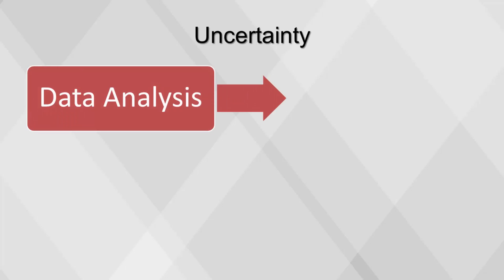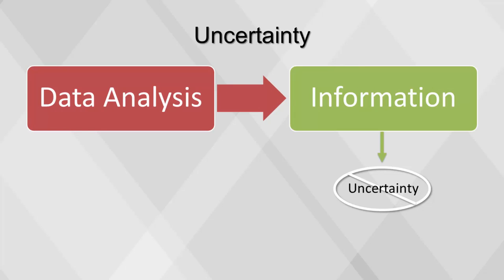The result of data analysis is information. Information resolves uncertainty. The uncertainty of an event is measured by its probability of occurrence. The more uncertain an event, the more information is required to resolve the uncertainty of that event.